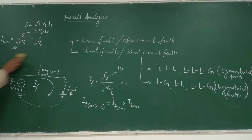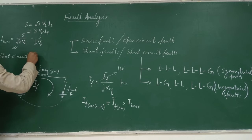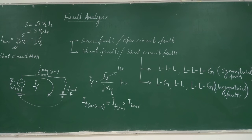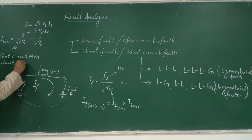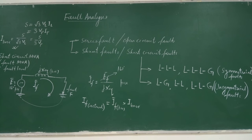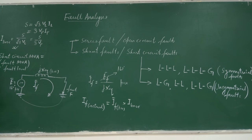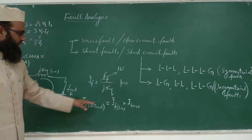Once the actual fault current is obtained, we can calculate the short circuit MVA, also known as fault MVA or fault level. The short circuit MVA in per unit equals V_F_prefault (per unit) times IF (per unit). Since we have assumed EF = VF = 1 per unit and IF per unit equals 1/X_eq, the reciprocal of the equivalent reactance gives the magnitude of fault current in per unit.